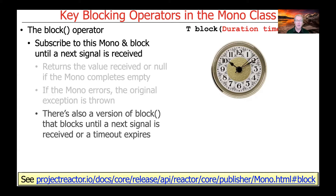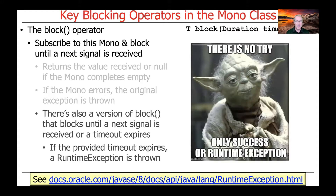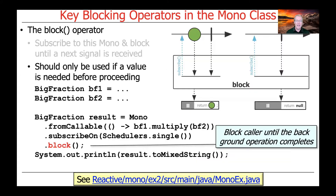There's also another variant of block that will block until the next signal is received or a timeout expires. If the provided timeout expires, then a runtime exception will be thrown. You should use this operator primarily if there's no other way to proceed without having the value that's emitted by the mono.